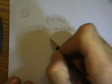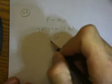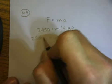So you take 2450 divided by 9.8, and you get a mass equal to 250 kilograms.